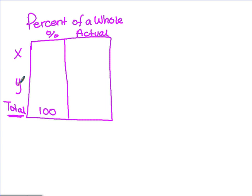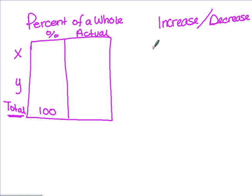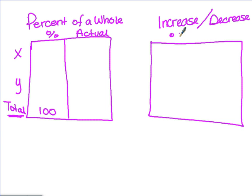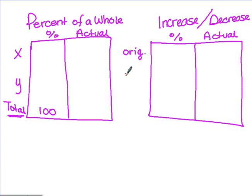Other types of problems are when we have a percent increase or a percent decrease. We're also going to be using a chart for these. Again, we still have our two columns: percent and actual. But instead of comparing two things and having a total, we're going to have an original, a change, and a new.